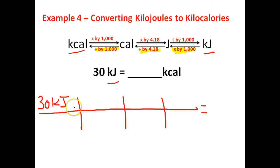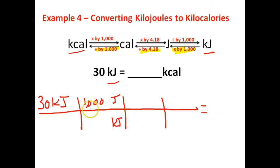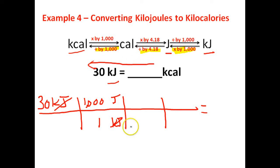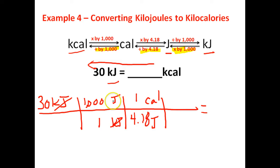The very first thing we're going to want to do is cancel out kilojoules. So I will put that at the bottom of my next equivalent statement and we're going to try to find joules first — I'll put that at the top. The prefix kilo means 1,000, so we'll put 1,000 on the top here. There are 1,000 joules in a kilojoule. These two units now cancel out, leaving you with joules. Now I have to cancel out the unit joule, so I will put that at the bottom of my next equivalent statement and I'm going to try to find calories first, so I'll put that at the top. We know that one calorie is 4.18 joules. We have joules on top, joules on bottom — they cancel, leaving you with calories.